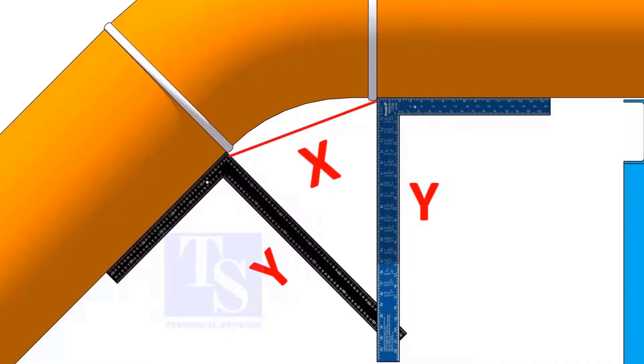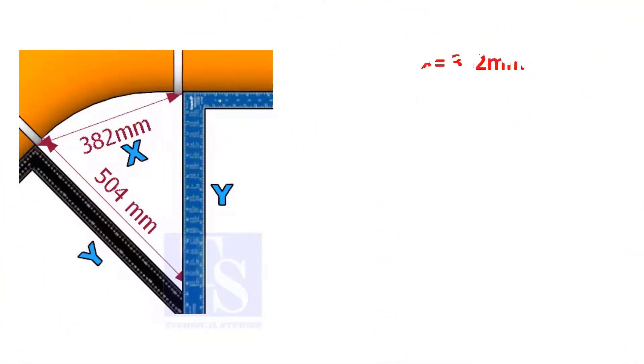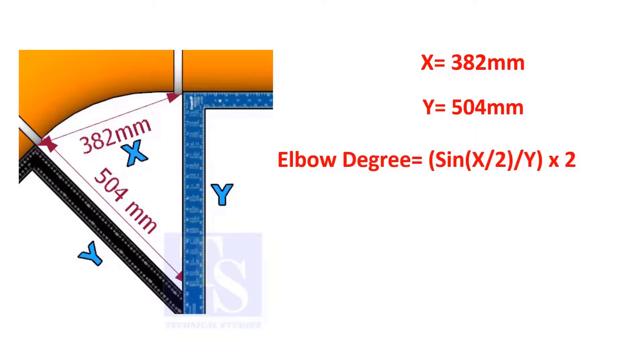Next, measure the distance between the corners of the right angles. Assume the value of X equals 382 millimeters, and Y equals 504 millimeters.